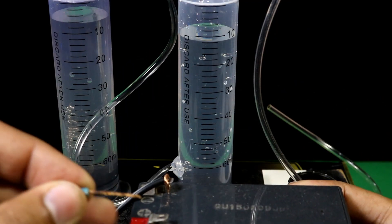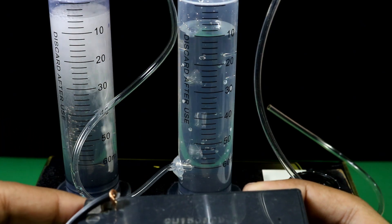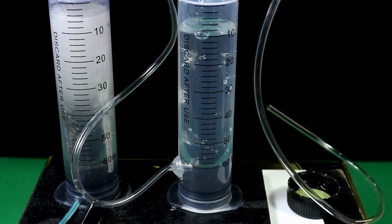Connect the positive wire to the positive terminal of the battery. As you can see, our generator starts working immediately and gas bubbles are coming out through the pipe.